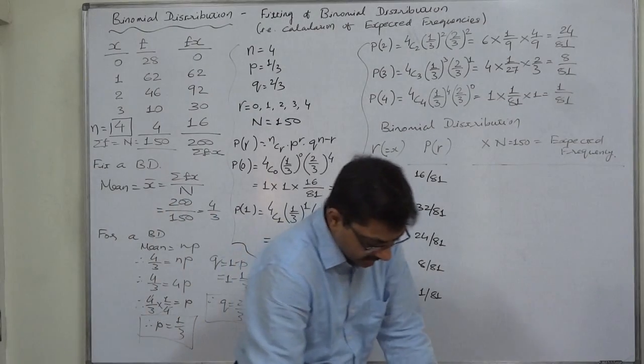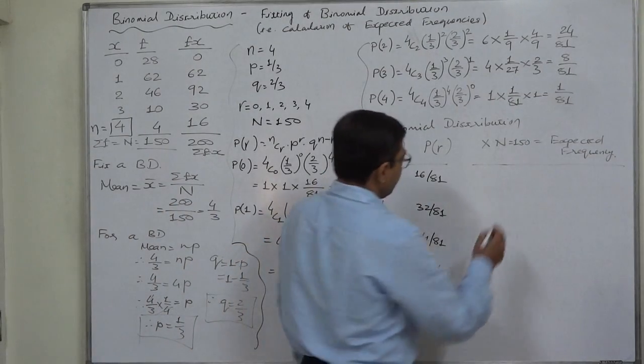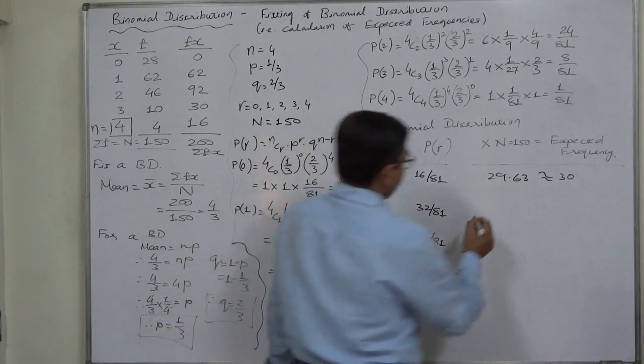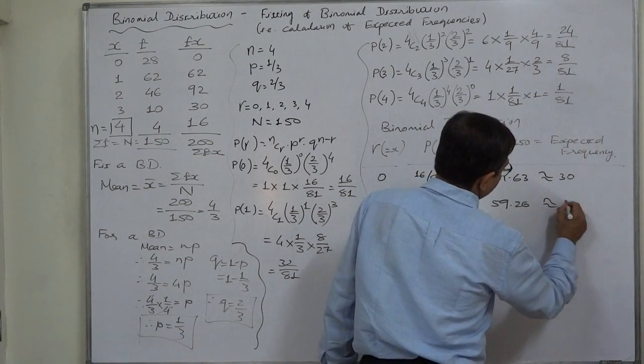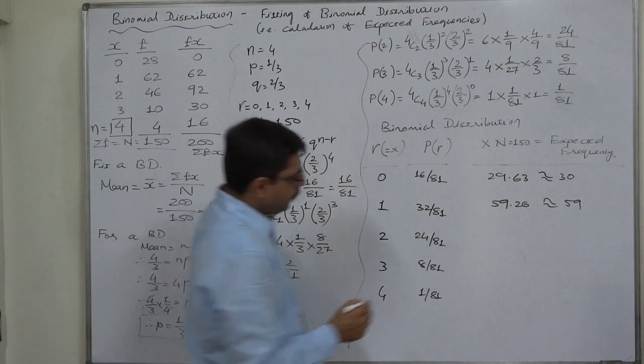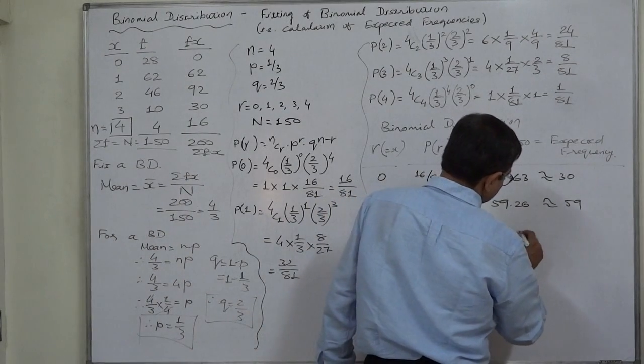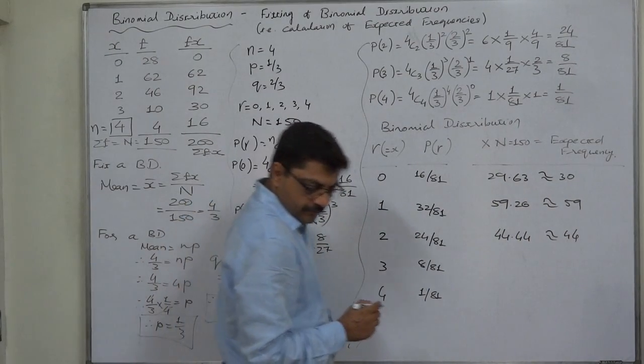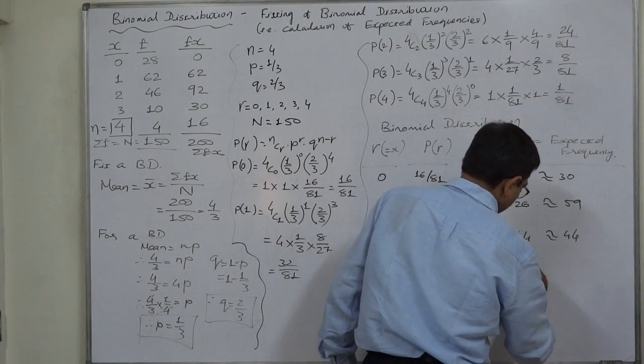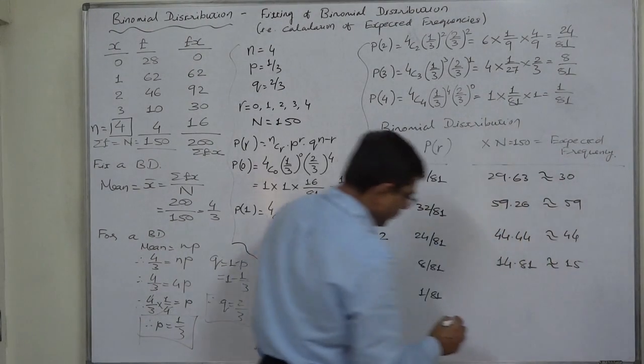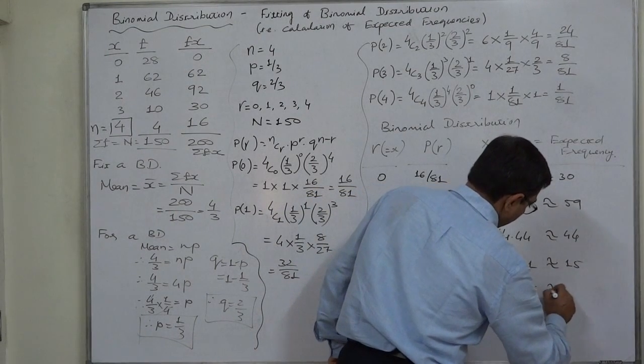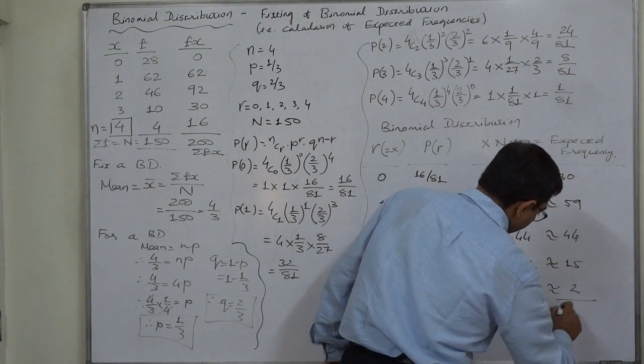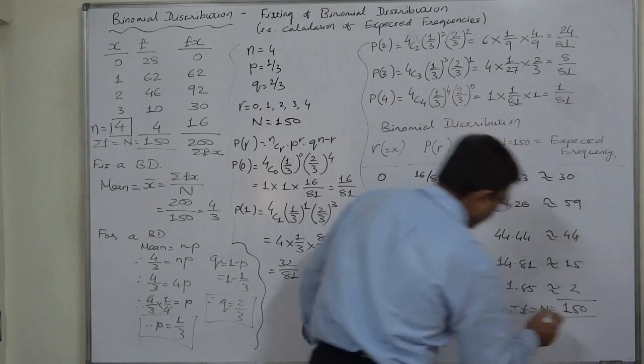So the results will be, I have already written, 29.63 that is equivalent to 30, 59.26 that is equivalent to 59 rounding off, 44.44 that is equivalent to 44, 14.81 that is 15, and 1.85 that is 2. And here the summation should be exactly equivalent to sigma F over N, 150.